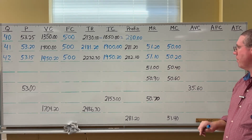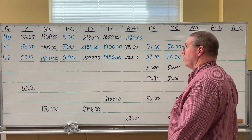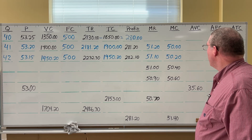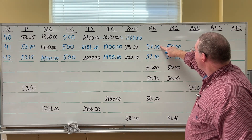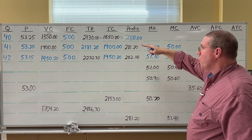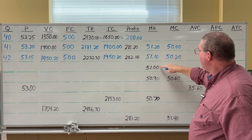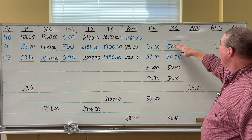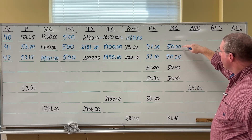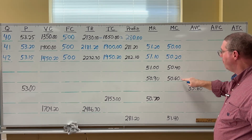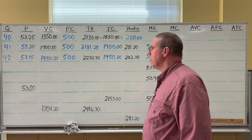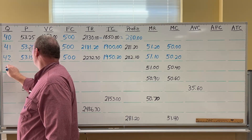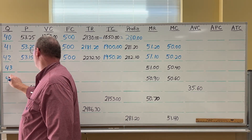Notice again: marginal revenue is diminishing — 51.20, 51.10, 51, 50.90 — as quantity goes up. And marginal cost is increasing — 50, 50.20, 50.40, 50.60. Now let's do two more rows: Q=42, 43, 44. Fixed cost stays at 500 for each row.